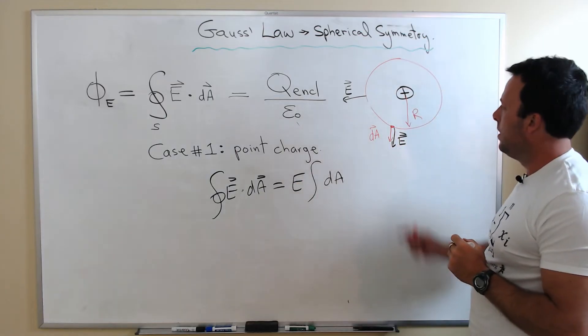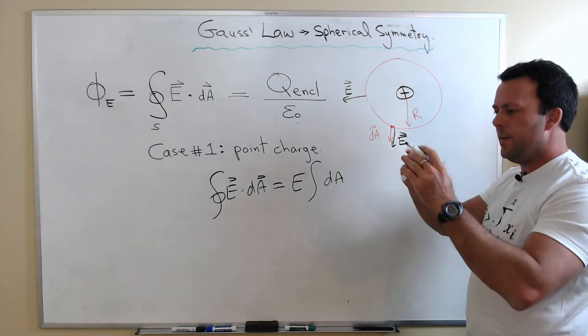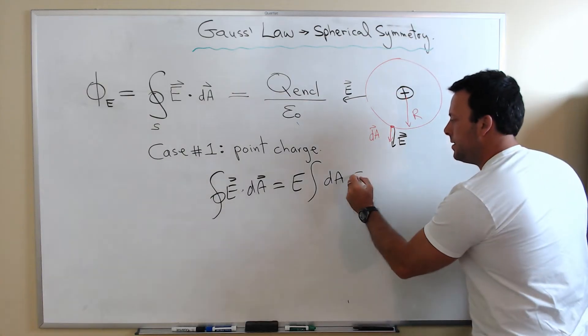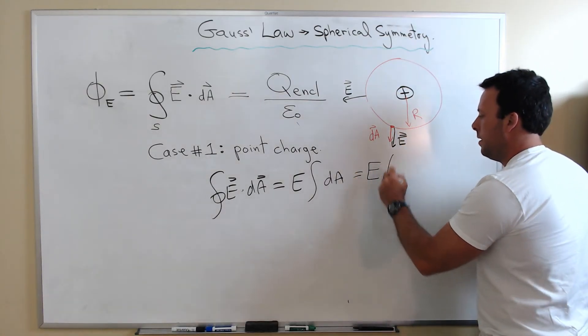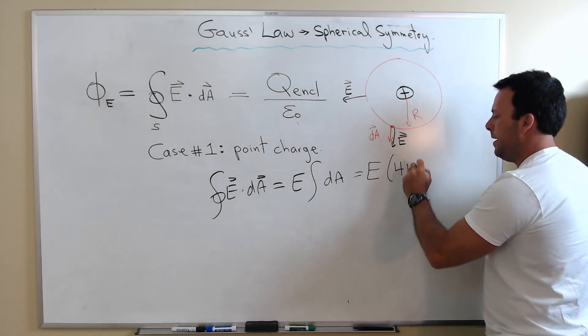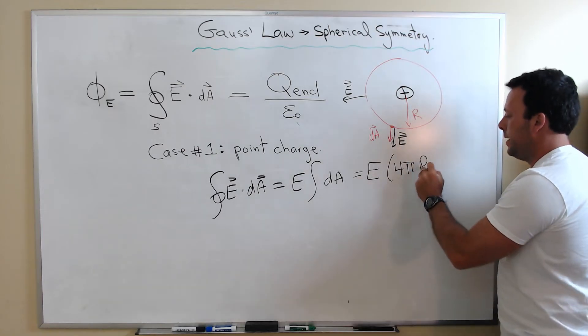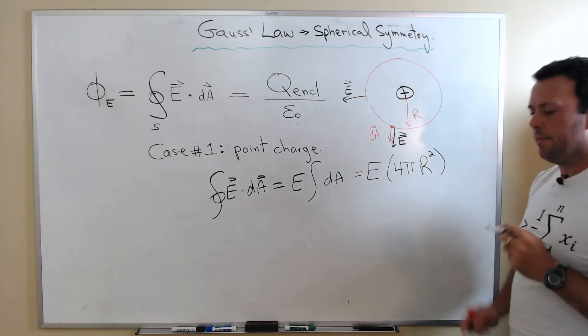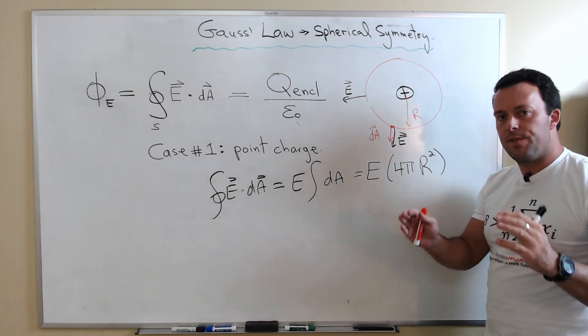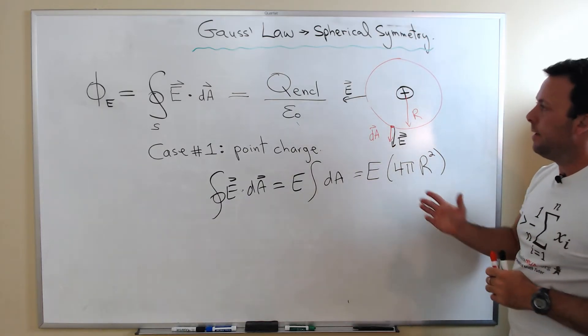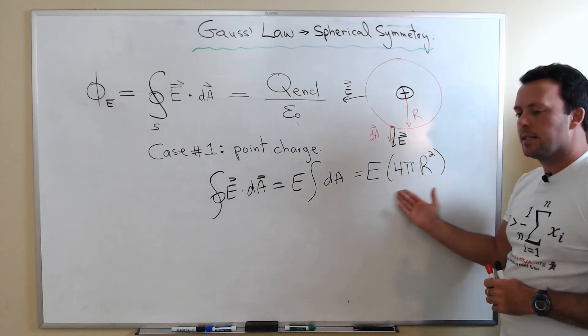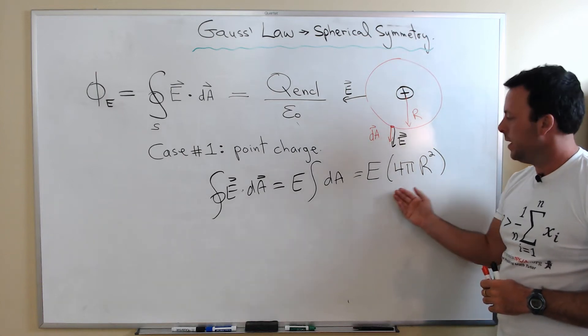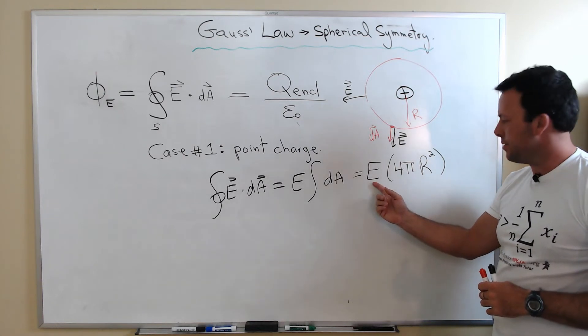So that's simply the area of a sphere, and that's a very easy quantity to write out: simply 4π multiplied times the radius squared. So that's it - for any object with spherical symmetry, the left-hand side of Gauss's law is going to look like this. It's going to be the magnitude of our electric field...